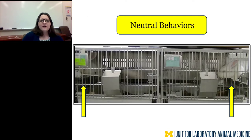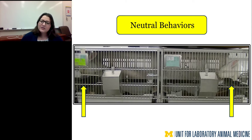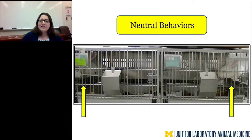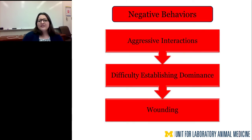The next category is neutral behaviors — when your rabbits are not interacting at all. This can be totally fine and normal. However, if you're monitoring a pair and every single day you consistently see only neutral behaviors, keep a very close eye on this pair. Consistent neutral behavior with no positive or negative interactions tends to indicate they have not established their dominance hierarchy — these pairs tend to lead to wounding. It's not always a problem, but consistently neutral-only behavior warrants extra monitoring.